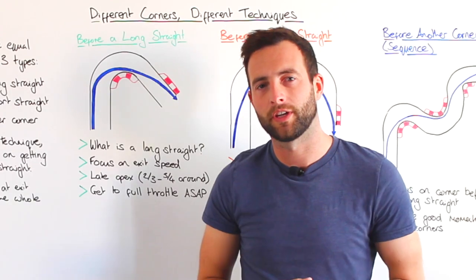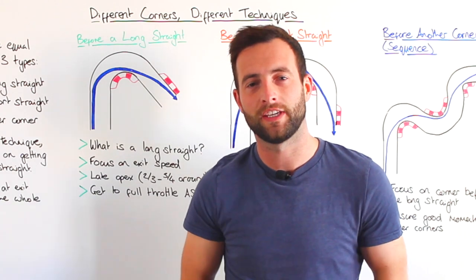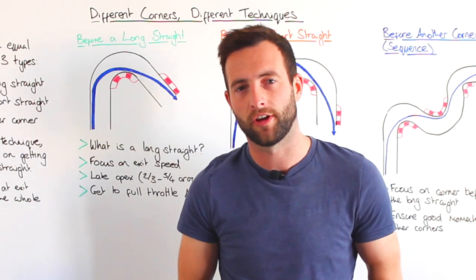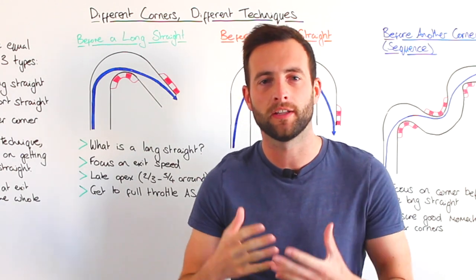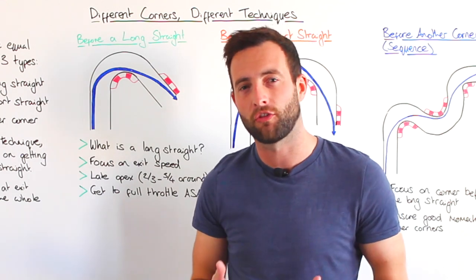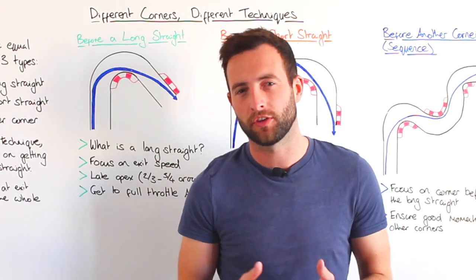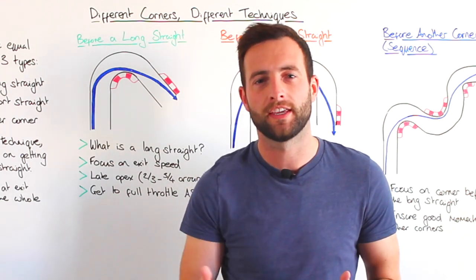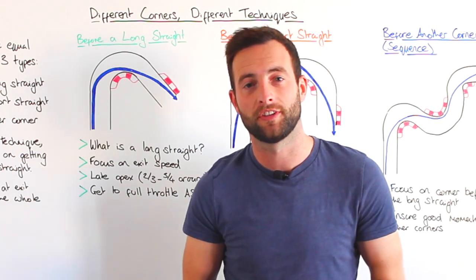So firstly we're going to take a look at corners that precede a long straight. Now what exactly is a long straight? Well we're going to classify a long straight as being a straight that you think you could overtake another car on or be overtaken.